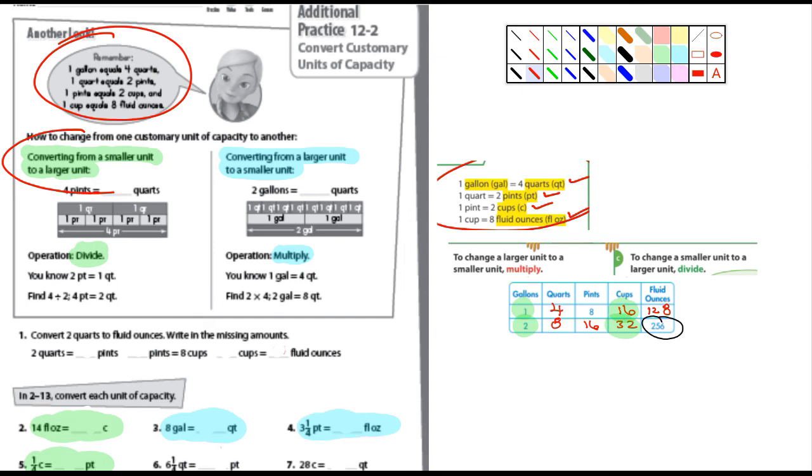So the first one I've highlighted in green here, it says converting from a smaller unit to a larger unit, you would divide. And then converting from a larger unit to a smaller unit, you would multiply.